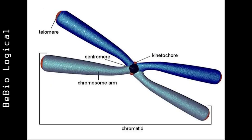Chromatid, centromere, telomere, secondary constriction, chromomere, chromonema, and matrix — these are the structural features that can be seen under the light microscope in a mitotic metaphase chromosome.